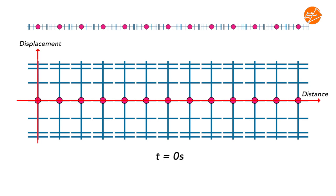Consider a vibrating force which disturbs the first particle to produce a periodic motion in a period of t equal to 12 seconds. The first particle is disturbed by a periodic vibrating force and moves to the next position during t equal to 0 second to t equal to 1 second. This is the displacement of the first particle from its equilibrium position at time t equal to 1 second. On the displacement-distance graph, the point is plotted as shown.